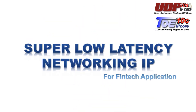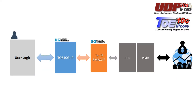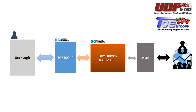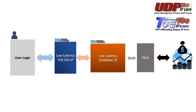Let's look at our new network IP solution: super low latency networking IP for FinTech applications. We get back to the block diagram of TOE 10G IP. To reduce overall latency, we group the 10G eMac IP and PCS into the new low latency 10G eMac IP, then change the TOE 10G IP to low latency TOE 10G IP — that's the new low latency system for FinTech applications.